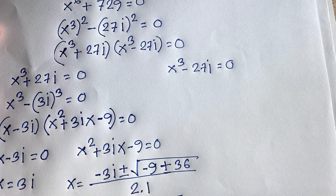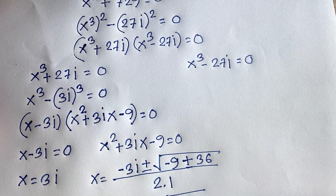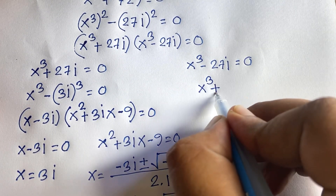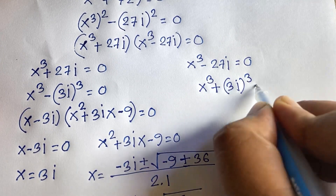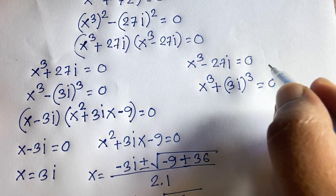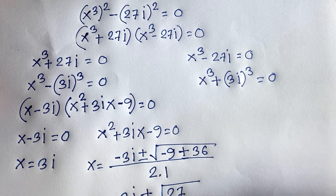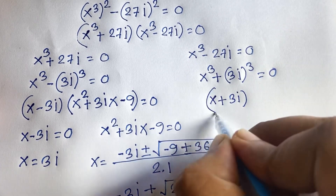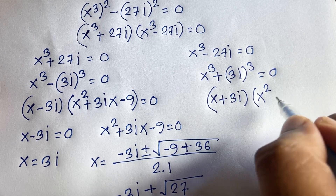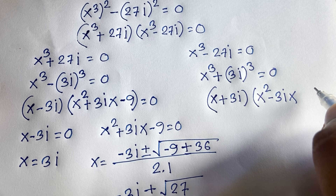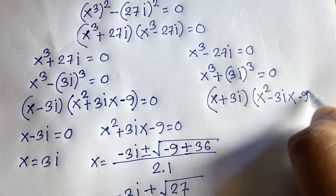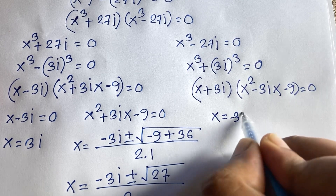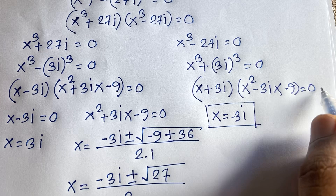Now for Case 2: x cubed minus 27i equals 0. Here 27i equals minus 3i whole cubed because 3 cubed equals 27 and i cubed equals minus i. So x cubed plus 3i whole cubed equals 0, which factors using the sum of cubes as x plus 3i times x squared minus 3ix plus 3i whole squared. Since 3i squared equals minus 9, this becomes x plus 3i times x squared minus 3ix minus 9 equals 0.